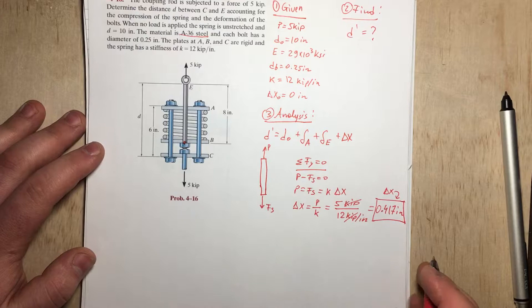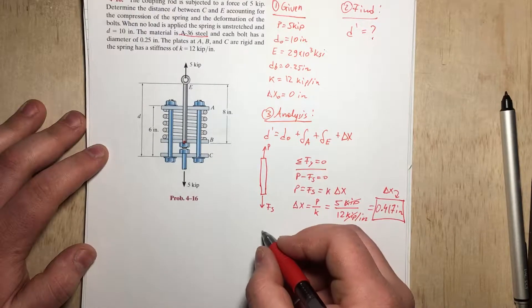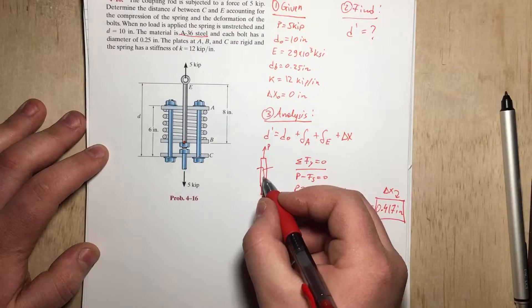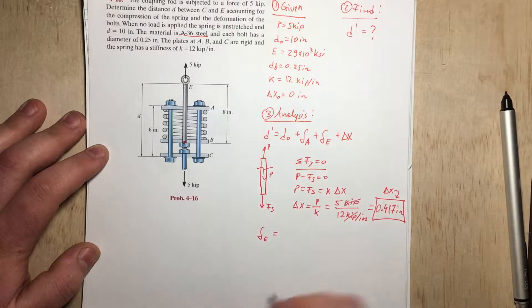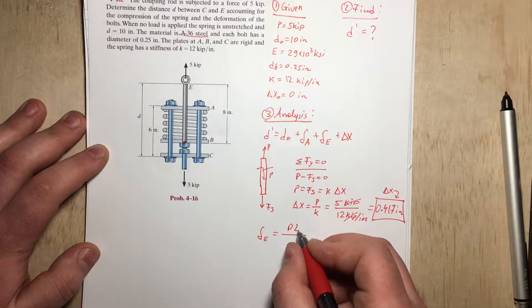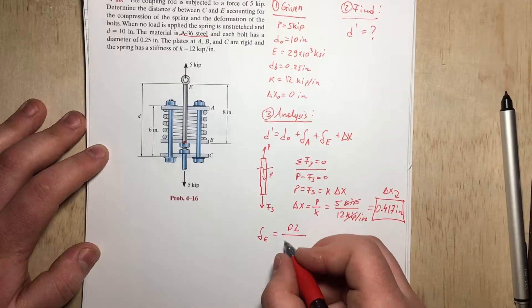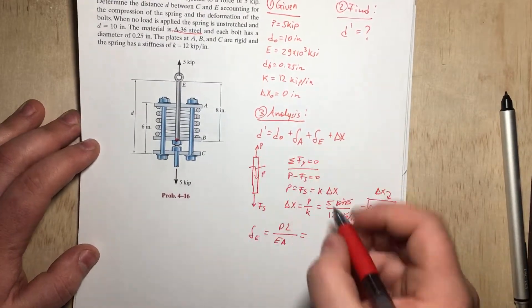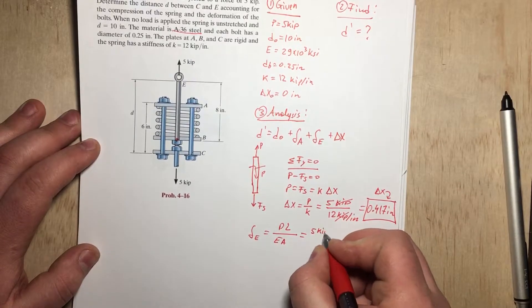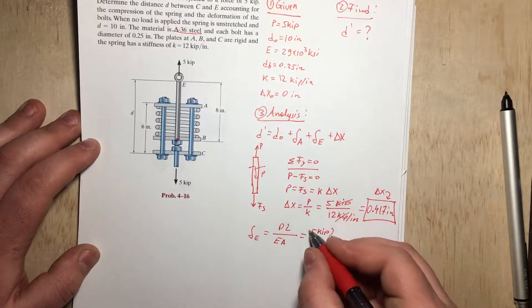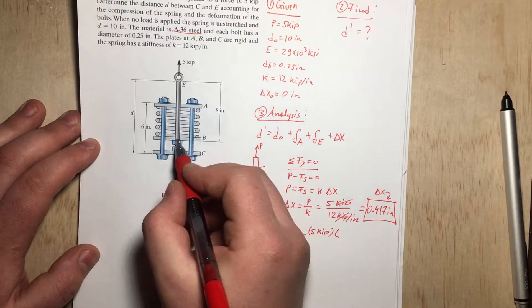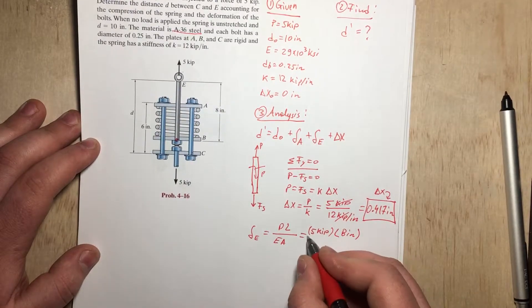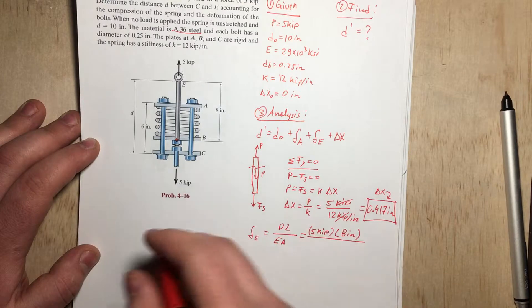This is delta X right here. We can also calculate delta E from here, because delta E is simply going to be the internal force, which if we cut, is going to be P, times the length of the whole rod, divided by EA. So if we substitute, we have a P of 5 kip. We also have the length of the rod, which is from here to there, which is 8 inches.